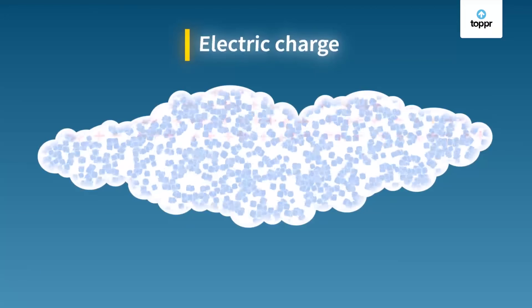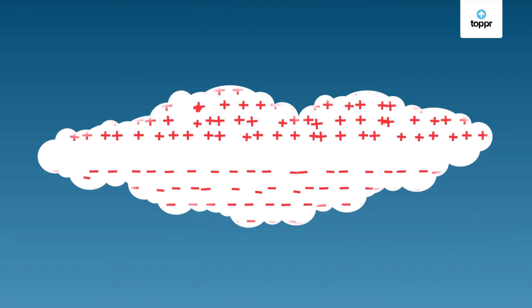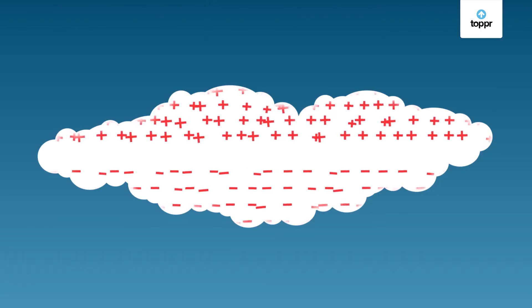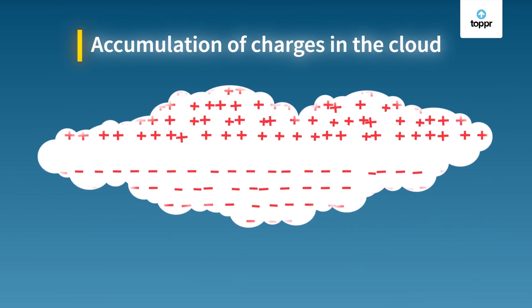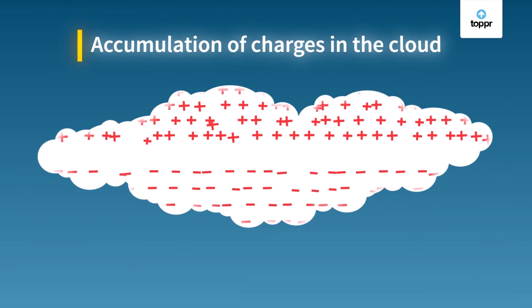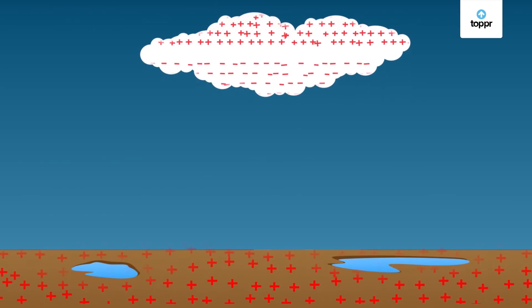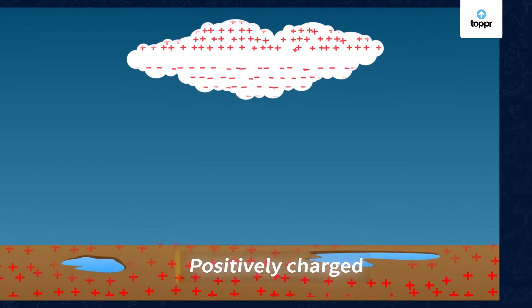The particles that are positively charged accumulate at the top of the cloud and the negatively charged particles sink to the bottom of the cloud. The more the ice particles rub against each other, the more the cloud gets charged. There are huge accumulations of charges at the bottom of the cloud. This very strong negative charge repels the electrons on the surface of the ground and makes the ground positively charged.